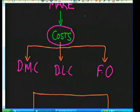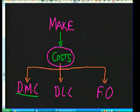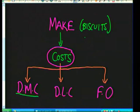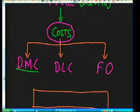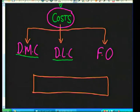Let's start with direct material costs using an example. Let's assume you decide to open a business where you're going to be making biscuits from home. Direct materials simply refers to all the ingredients that will be used in the making of those biscuits — materials that go directly into the manufacturing of the item, in this case the biscuits.